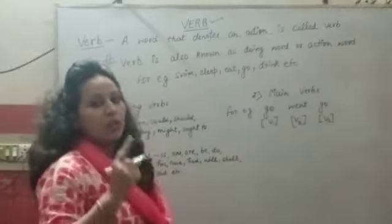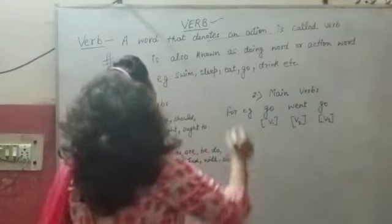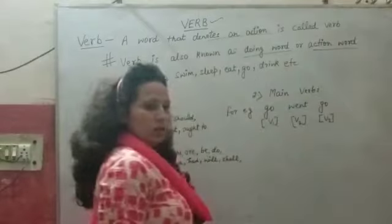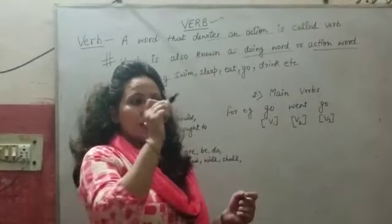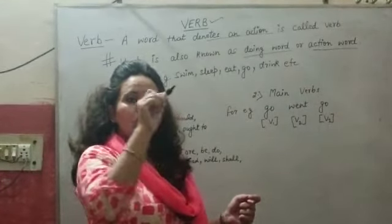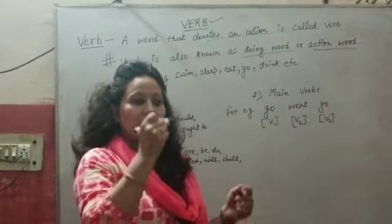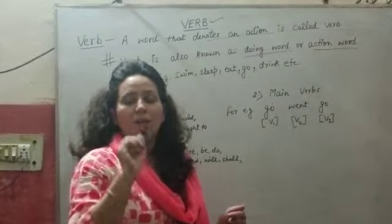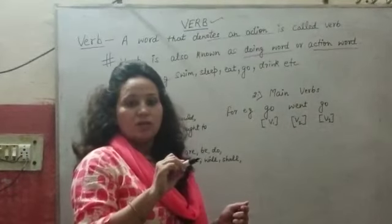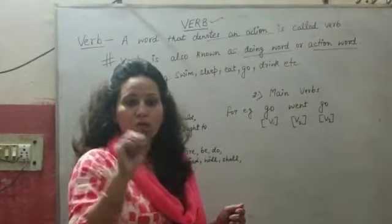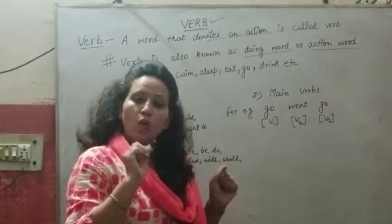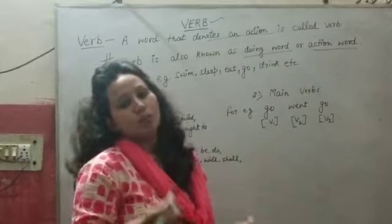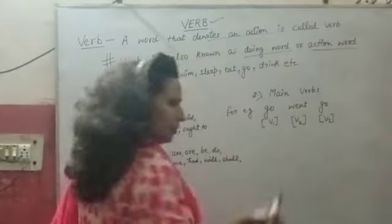We also know the verb by two names: one is 'doing word' and the other is 'action word.' Sometimes when you are asked a question — find out the action word in the following sentences — you have to find the verb. This is the doing word and action word.